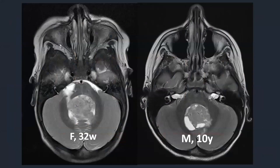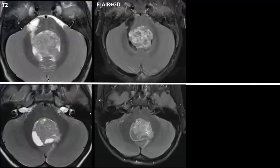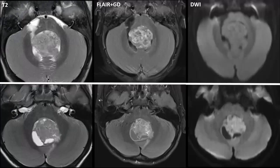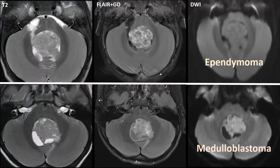Here is another lookalike — a 32-week-old vs. a 10-year-old boy with a medulloblastoma. On T2 and gadolinium images they look similar, but on diffusion: the medulloblastoma has diffusion restriction while this other tumor has no diffusion restriction whatsoever. This was an ependymoma. The key difference between medulloblastomas and ependymomas is diffusion restriction — ependymomas generally don't have it unless they are high grade. Another differentiator is the growth pattern.